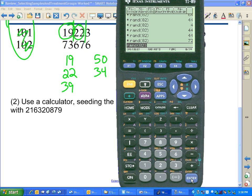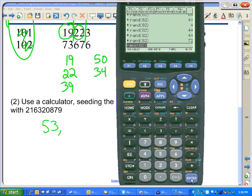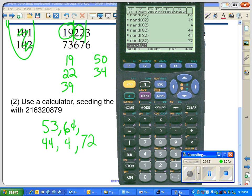We have 53, 64, 44, 4, and 72 as our five people. There you go. That's how to do a simple random sample using either a table of random digits or a calculator.